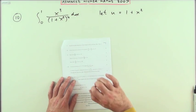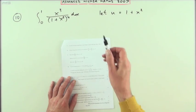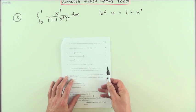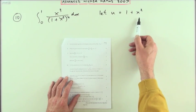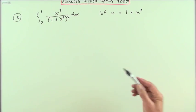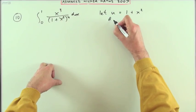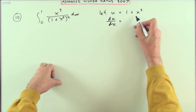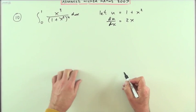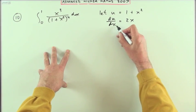Number 10 from the 2007 Advanced Higher Maths: integration by substitution, five marks to evaluate this integral using the given substitution. Let's first of all get some differentials going. du/dx would be 2x, which means that dx would be du over 2x.